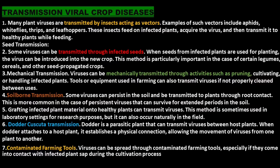Grafting infected plant material onto healthy plants can transmit viruses. This method is sometimes used in laboratory settings for research purposes, but it can also occur naturally in the field. Dodder (Cuscuta) transmission involves a parasitic plant that can transmit viruses between host plants — when dodder attaches to a host plant, it establishes a physical connection, allowing movement of viruses from one plant to another. Viruses can also be spread through contaminated farming tools, especially if they come into contact with infected plant sap during cultivation.